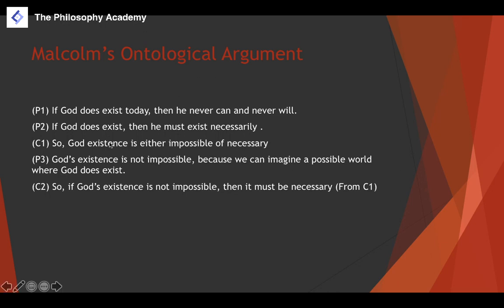From conclusion one, God's existence is either impossible or necessary. We've established it's not impossible. It can't be both, and it can't be neither — that would be a contradiction. So if it's not impossible, it must be necessary. Therefore, God necessarily exists.